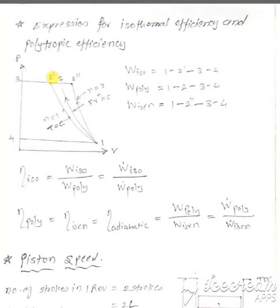Process 1-2 is the Polytropic Compression, 1-2 prime is the Isothermal Compression, and 1-2 double prime is the Isentropic Compression.